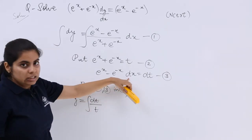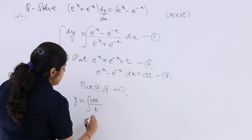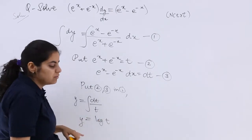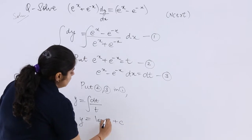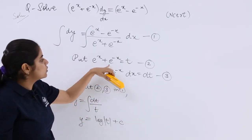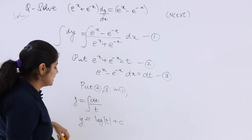You understood this, I hope. Now I will write y = log|t| + c. What was t? t was e^x + e^-x.